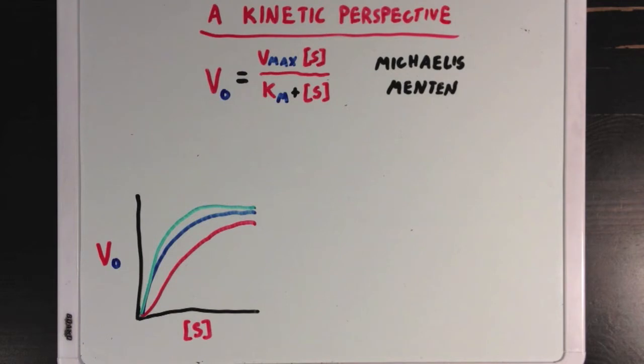the activators and inhibitors affect VO through either increasing or decreasing KM, since the Vmax values seem to be pretty close between the three curves. So an activator here might be decreasing KM.